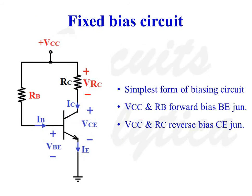Now let us consider the first biasing circuit: the fixed bias circuit. In this circuit, there is a single supply voltage VCC. Resistance RC is connected between VCC and the collector of the transistor. Resistance RB is connected between VCC and the base of the transistor. This is the simplest form of biasing circuit. VCC along with resistance RB forward biases the base-emitter junction, and VCC along with resistance RC reverse biases the collector-base junction, keeping the transistor in the active region.